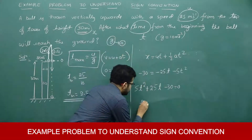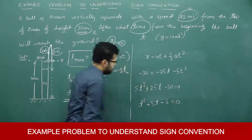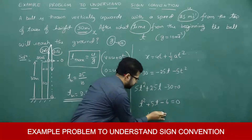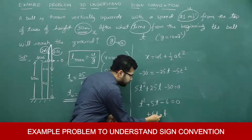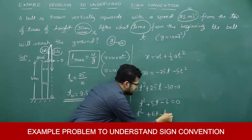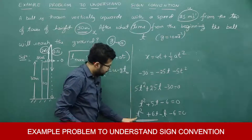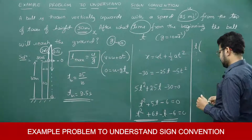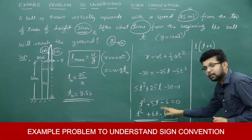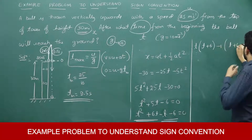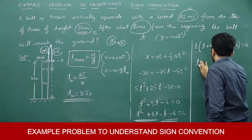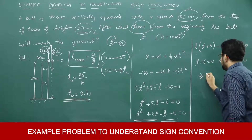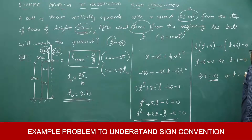Rearranging: 5t² − 25t + (−30 − 0) → 5t² − 25t − 30 = 0... bringing terms over: +5t² − 25t + 25t − 30 = 0 → 5t² + 25t − 30 = 0. Wait, correcting: dividing the equation by 5 gives t² + 5t − 6 = 0. Splitting +5t as +6t − t: (t² + 6t) − (t + 6) = 0, giving t(t + 6) − 1(t + 6) = 0, so (t + 6)(t − 1) = 0. Thus t = −6 or t = +1 second.